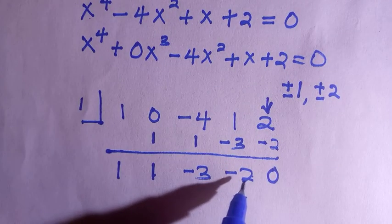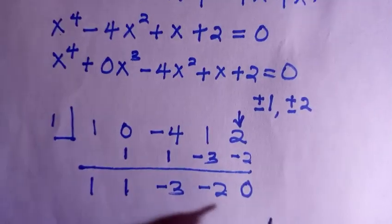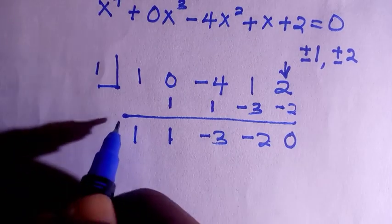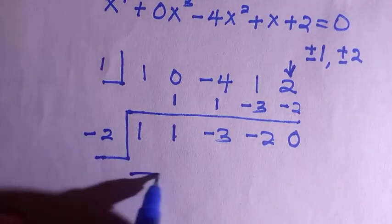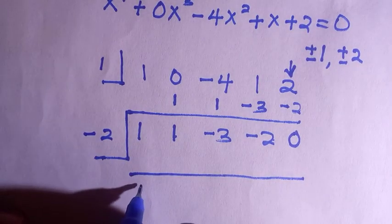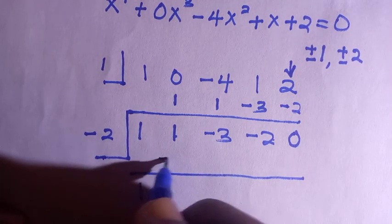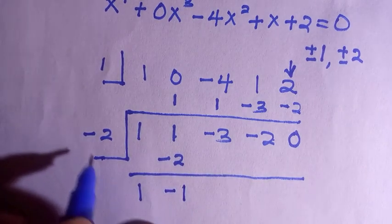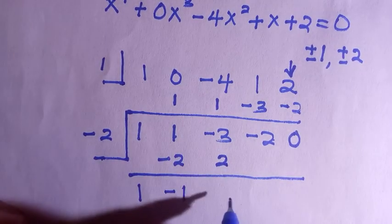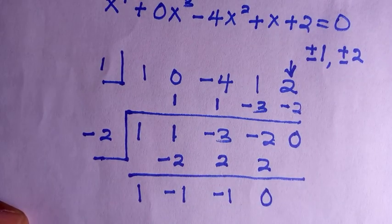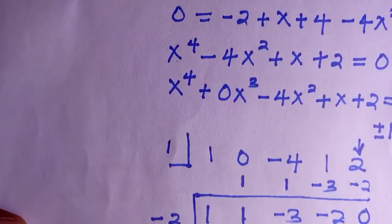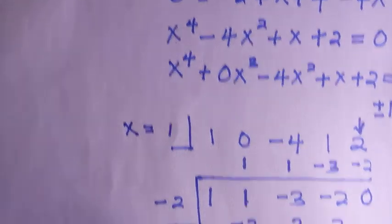Let's see the second root using continuous synthetic division. I've tested already, so we're going for negative 2 — not plus 2. You can test positive 2 yourself. We write 1 again, then negative 2 times 1 is minus 2, and summing gives minus 1. Then minus 2 times that gives 2, which sums to negative 1. Then 2 times that gives plus 2, and since this also equals 0, negative 2 is also a factor.